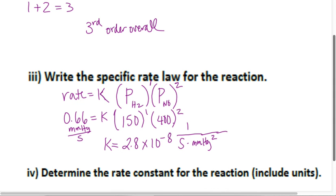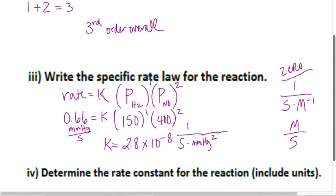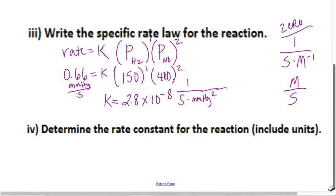Just know that in your homework, one of the questions wants you to do the units on a zero-order reaction. It would be 1 over your unit of time — say seconds — times molarity to the negative one. So that simplifies: for zero order, the units of K are just molarity per second.